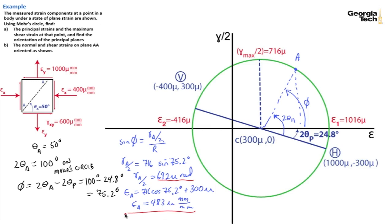Now I have my point A, the strain conditions there. The normal strain is 483 mu, and the shear strain divided by 2 is 692 mu. Let's call that our answer because that's the normal and shear strains on plane AA.